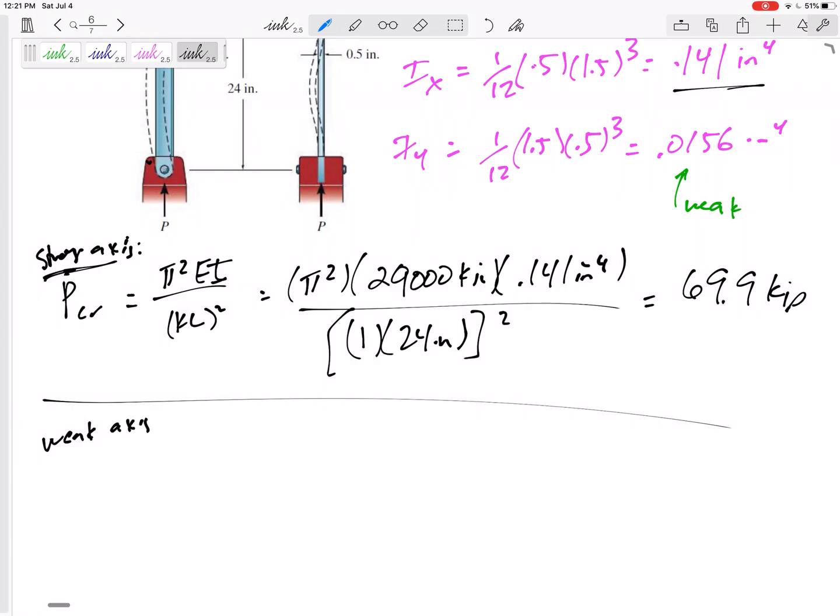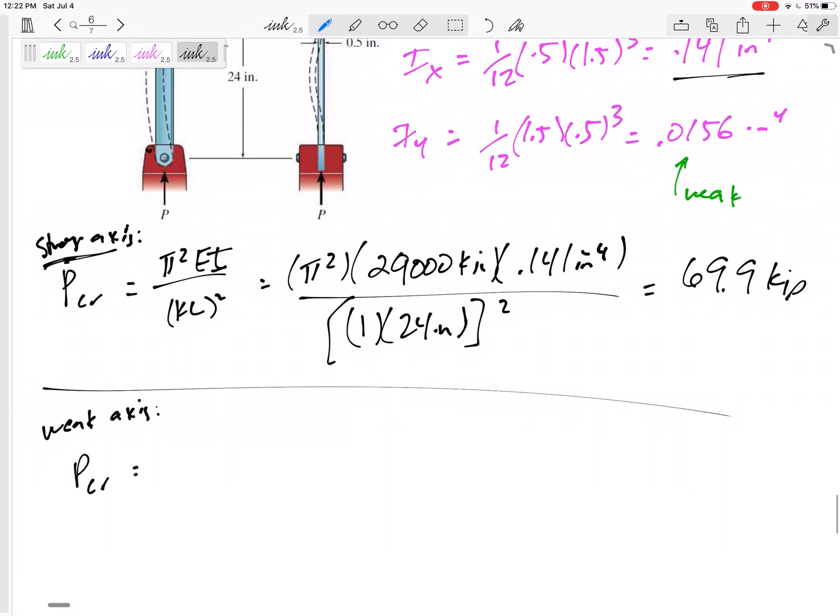Let's calculate the weak axis buckling. P critical, pi squared EI over KL squared. Pi is going to stay the same, E is going to stay the same because it's the material, but the I is going to be different.